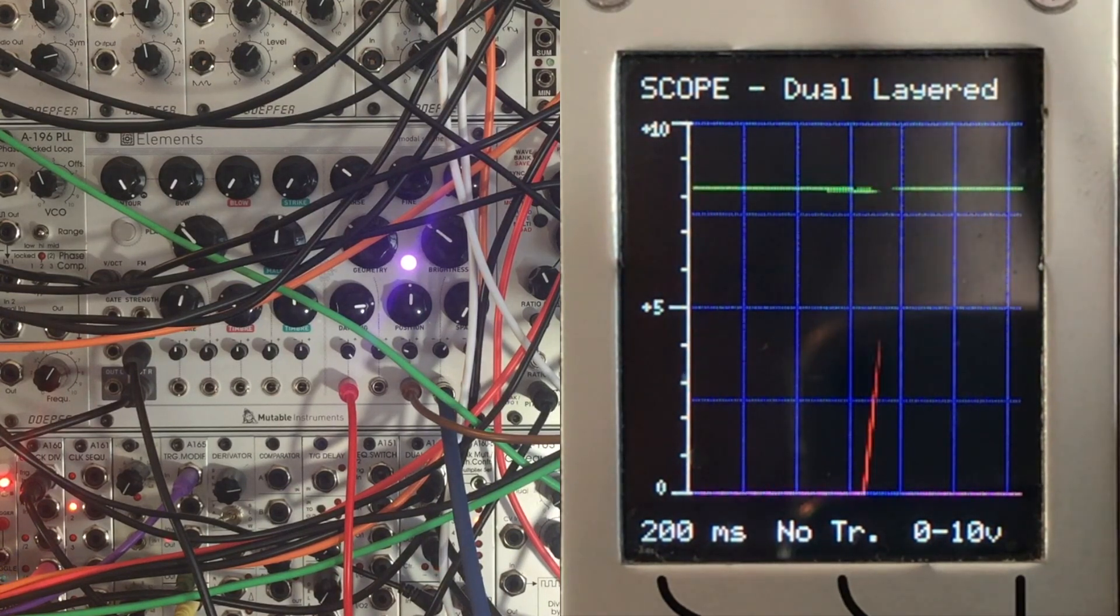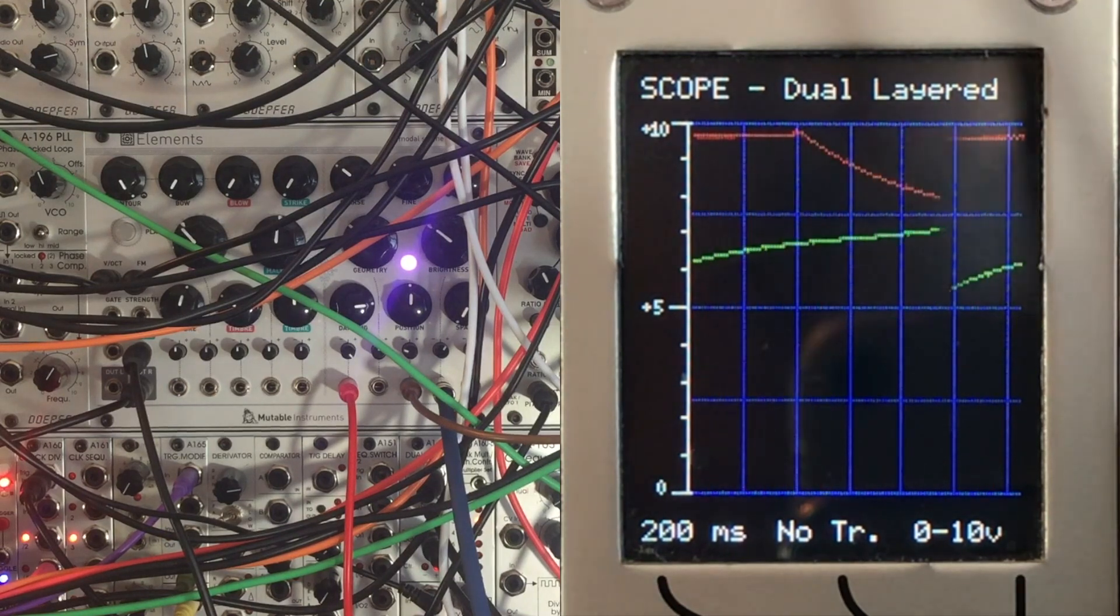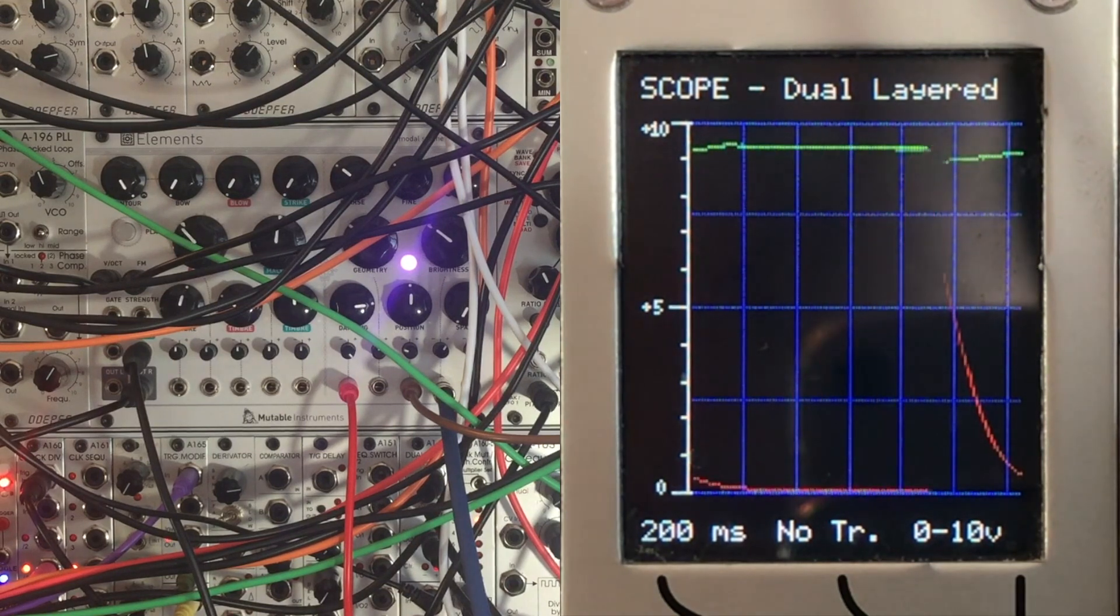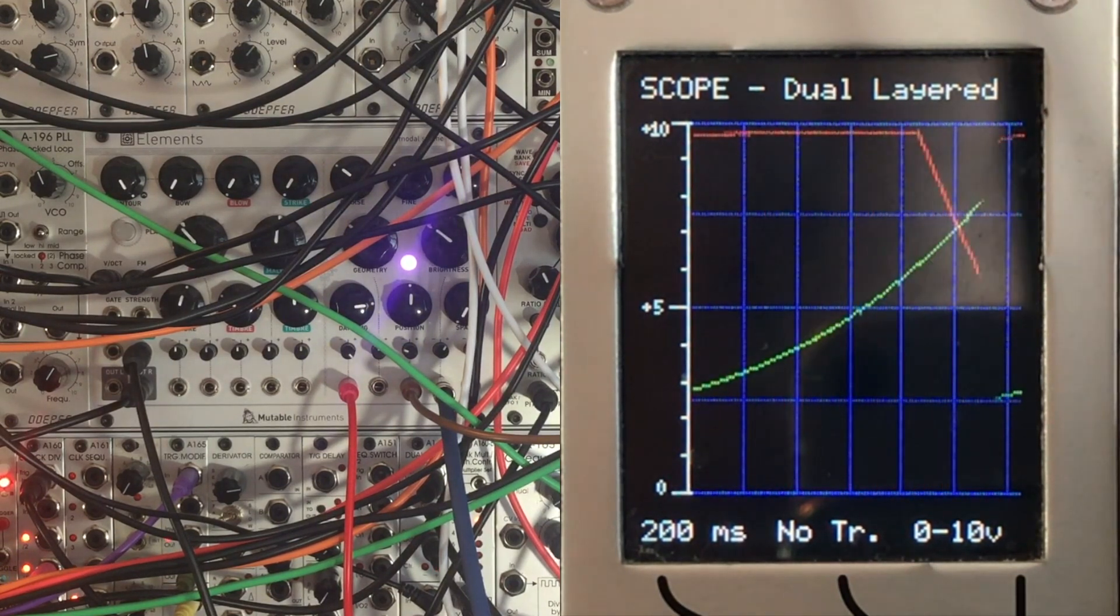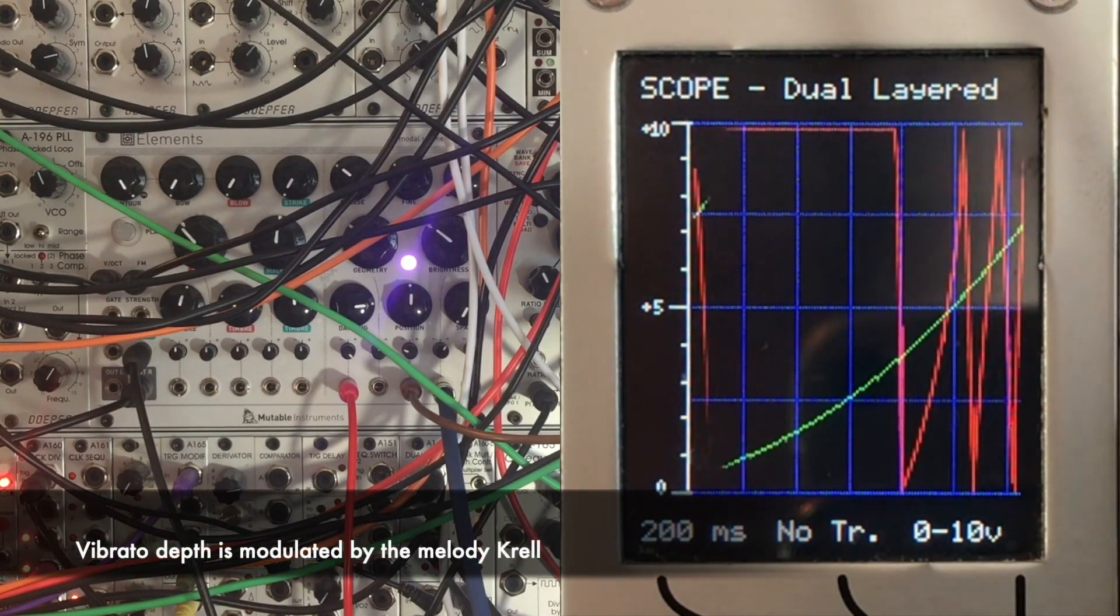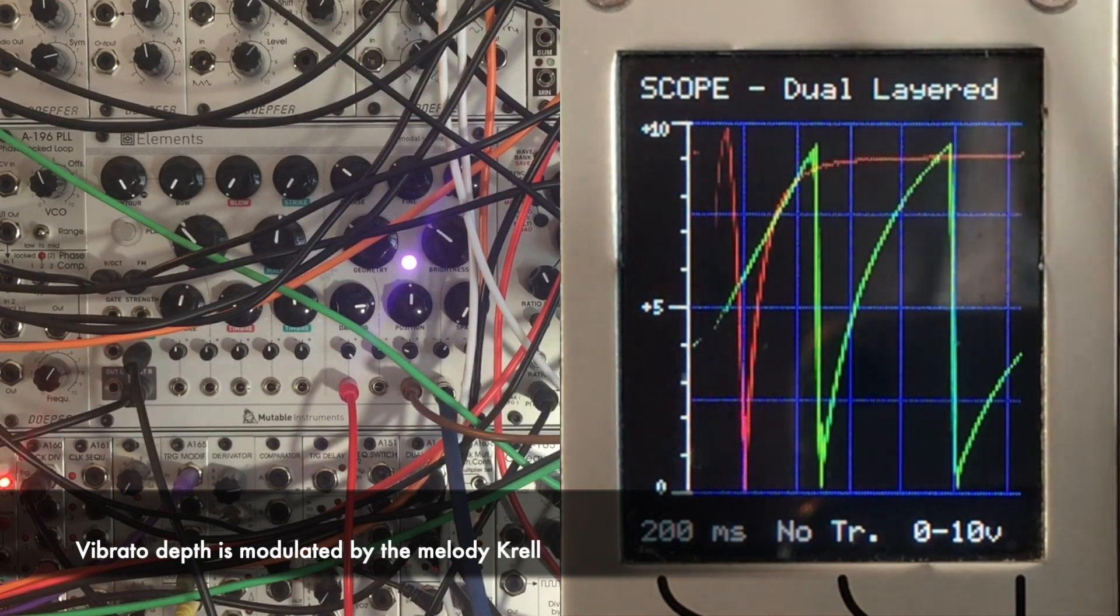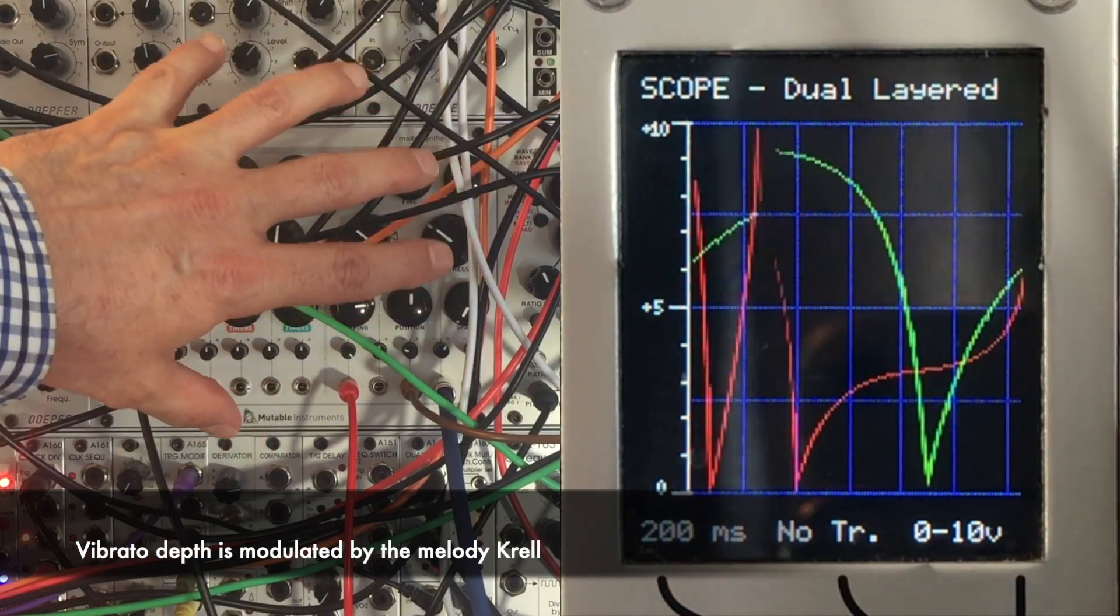Now if you remember back to our earliest videos in this series, I'm using an inverted envelope—the Krell envelope from the melody voice—to back off on the vibrato whenever that melody Krell envelope goes high. And I'm using that exact same output so that I'm modulating the amount of vibrato coming into the counterpart voice.